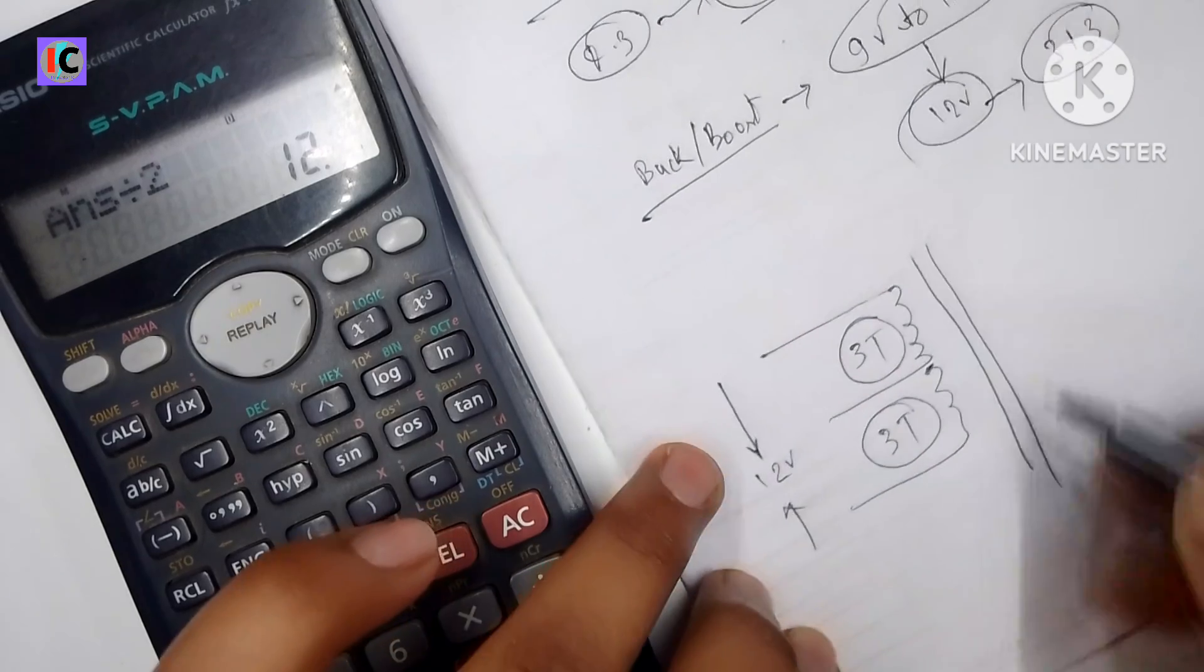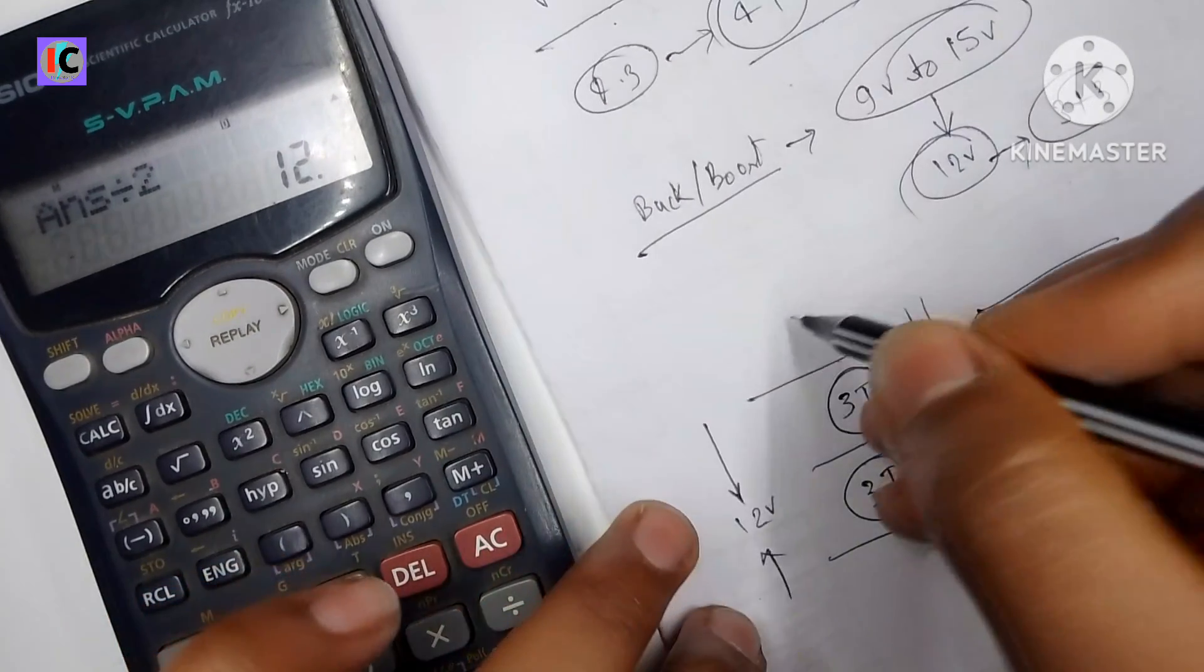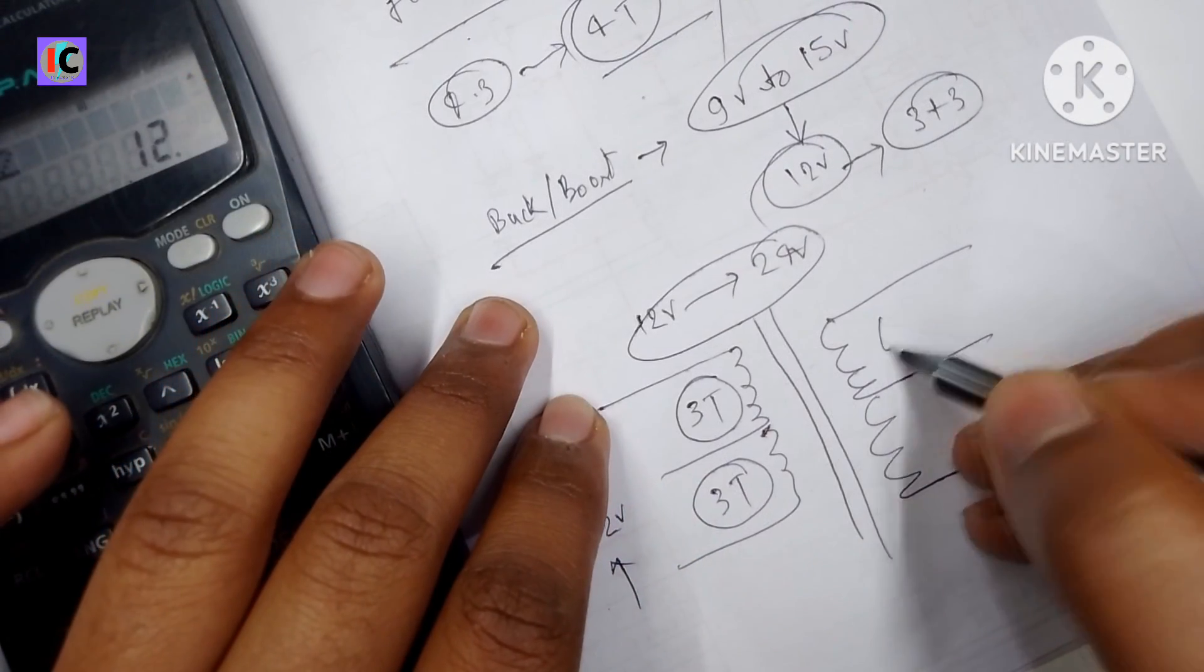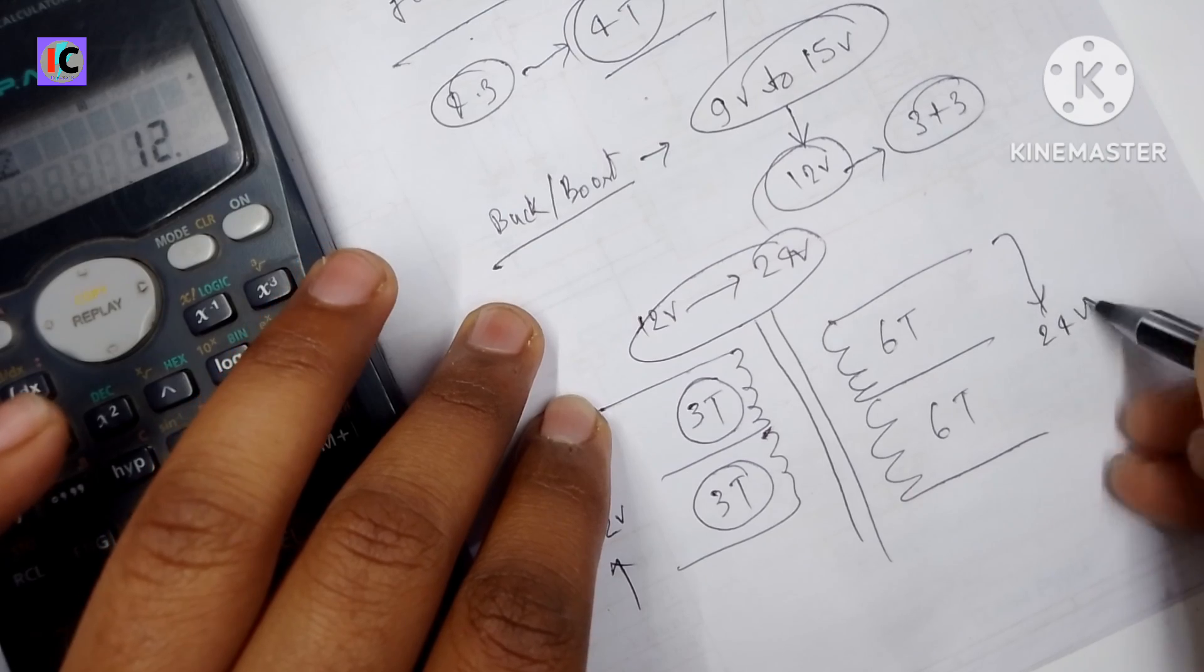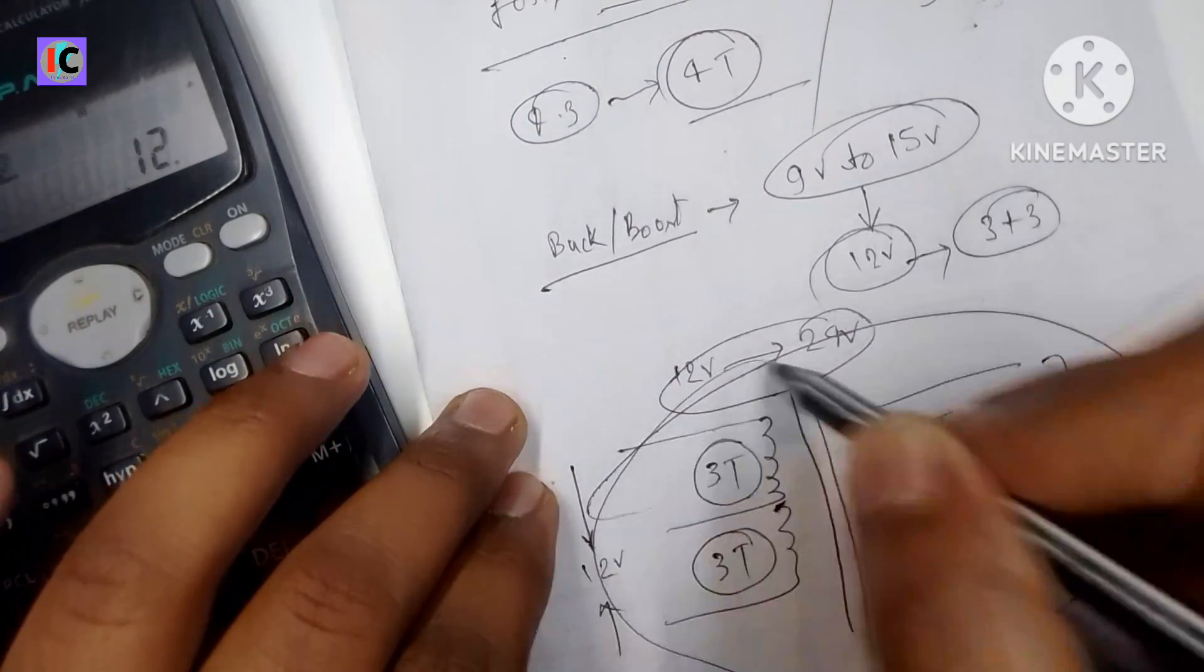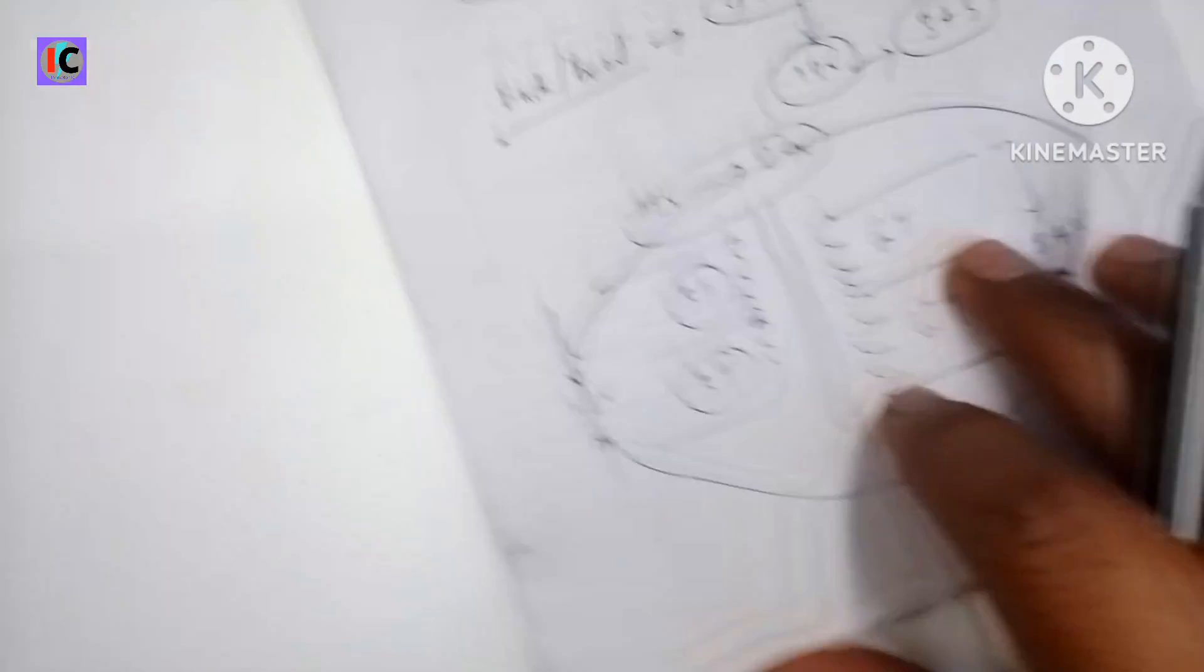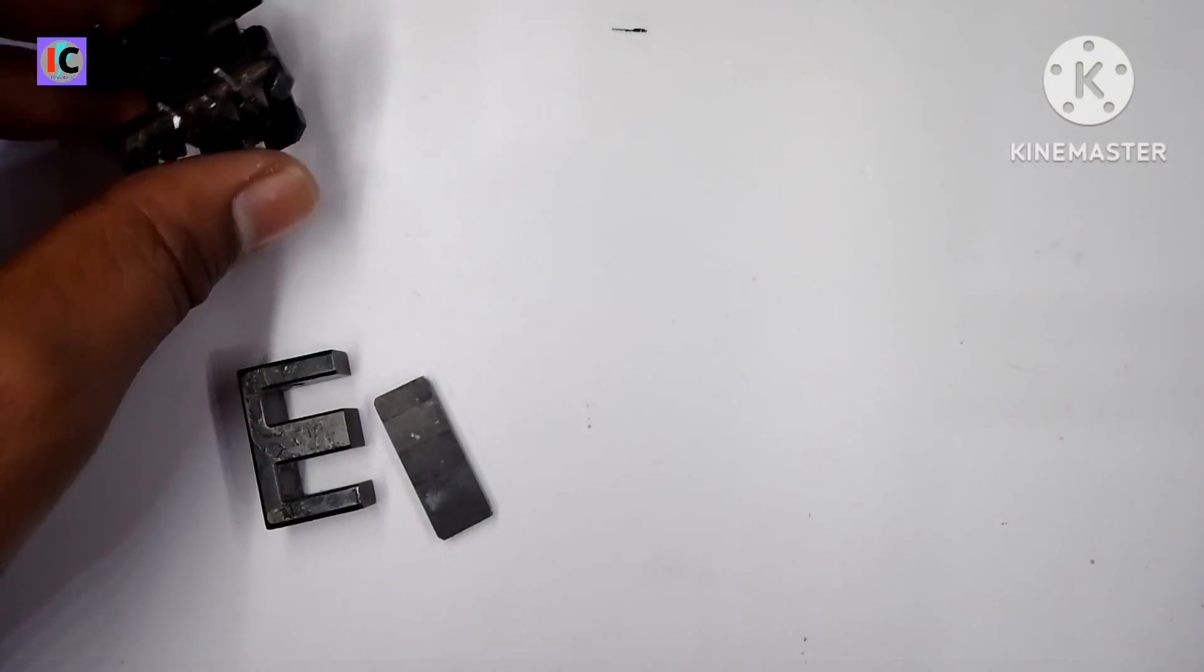So here I'm making 3-0-3 turns in the primary side so that we can give lower voltage like 7 or 6 volts. The same repeats in the secondary side. So for 12 volts it's 3-0-3 turns, and for 24 volts it's 6-0-6 turns in the secondary side. Our calculation is done and now we make the transformer winding.